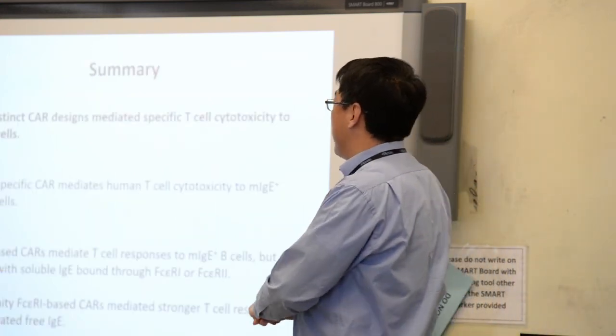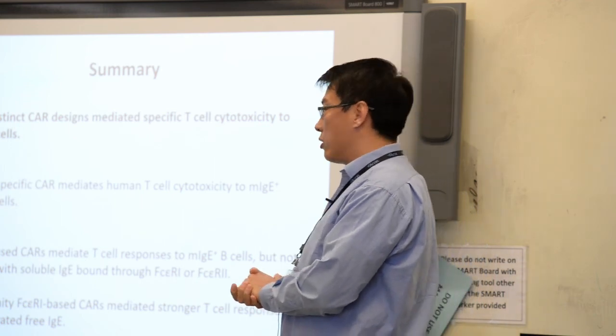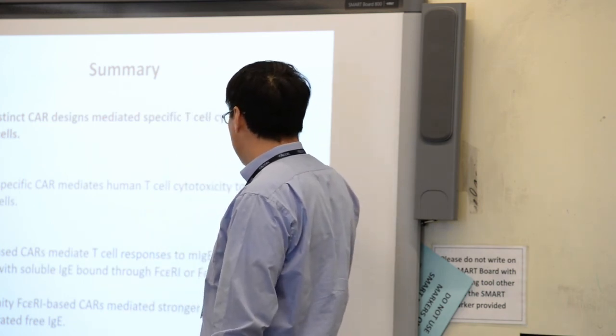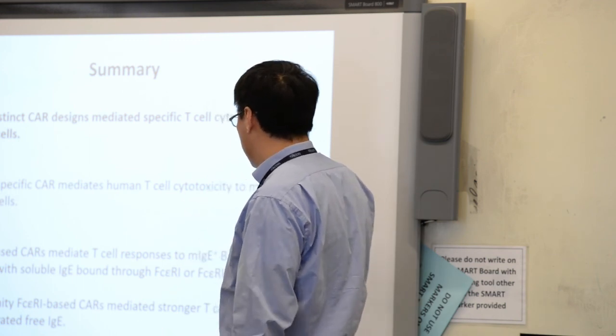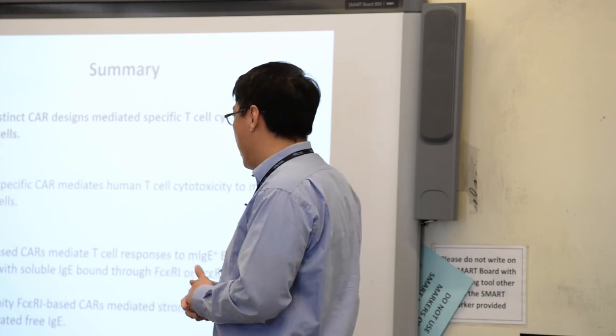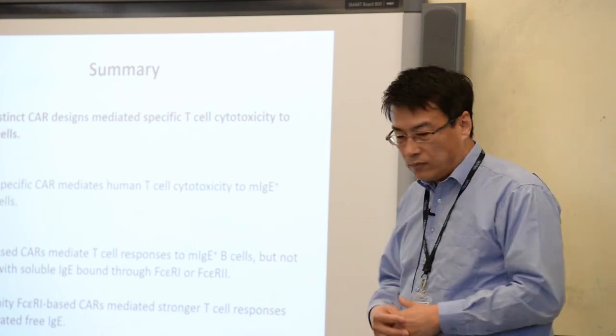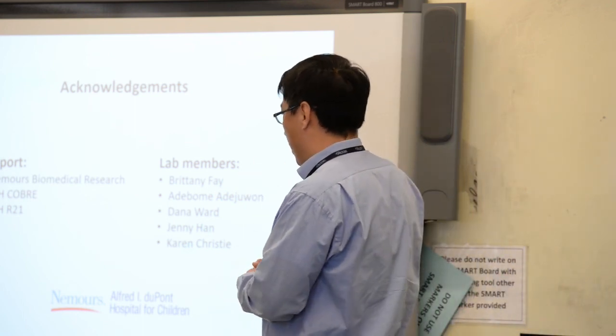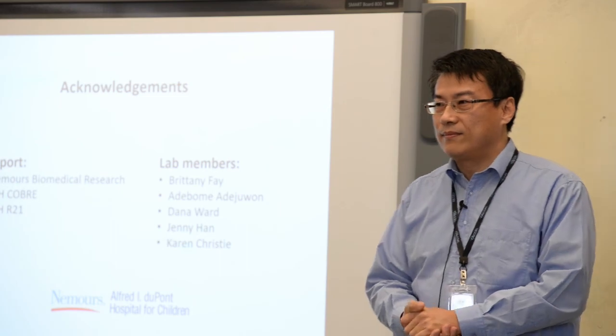So in summary, we designed two distinct CARs and they both mediated specific T cell cytotoxicity to membrane IgE expressing B cells. The EMPD-specific CARs mediated human T cell killing of IgE-positive target cells. The Fc receptor 1-based CARs did the same thing and they avoided killing. They are not sensitive to the presence of soluble IgEs, and they do not kill cells with secreted IgE captured on cell surface through the receptors. That's it. I want to thank the support from Nemours and NIH and our lab members, especially Brittany and Dana. Thank you.